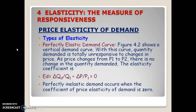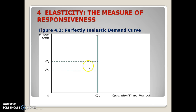When we look at elasticity on a graph, this is classified as a perfectly inelastic demand curve, which means when there's a change in price, consumers will buy the exact same amount. That is perfectly inelastic, and it doesn't happen very often. Probably the best example is goods like insulin or any required medicine that people have to take to survive.